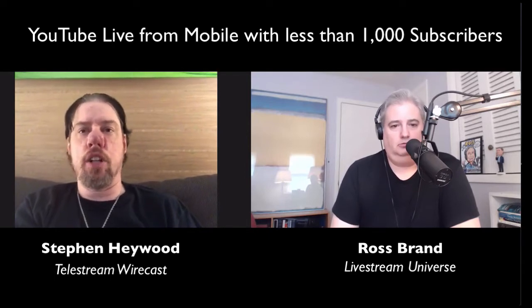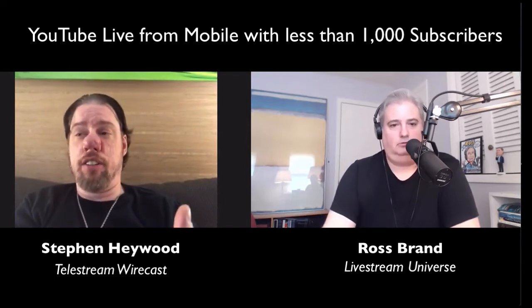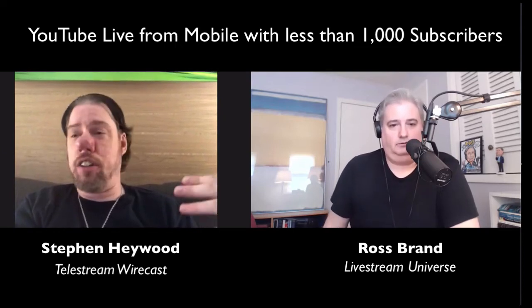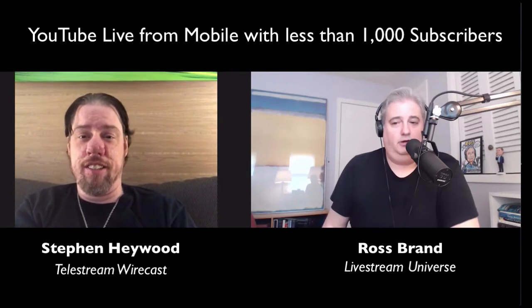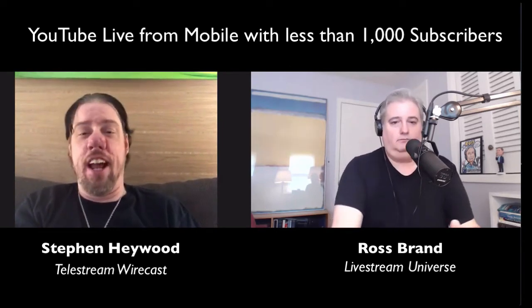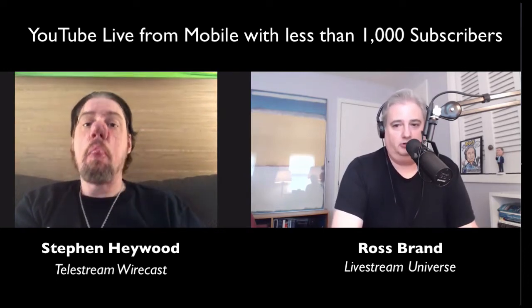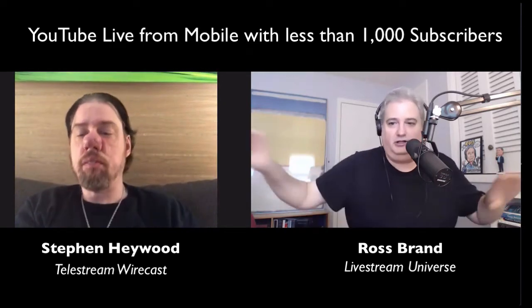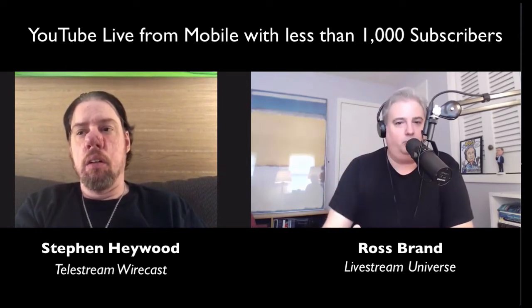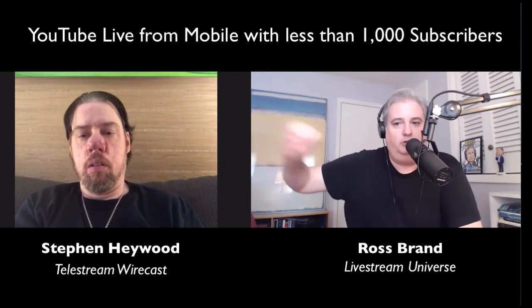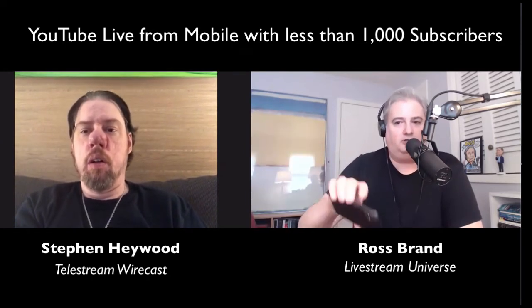I always suggest to people: work with what you have. If you've got the phone, like we're doing right now, absolutely use it — it's ready, willing, and able. I know one of the things you do when you do your studio shows is you stream not just to one primary platform, but to your website and then out to every destination. Can you use Wirecast Go and RTMP to stream to Switchboard Live and then distribute the same way from Wirecast Go as you would from Wirecast or any other encoder?